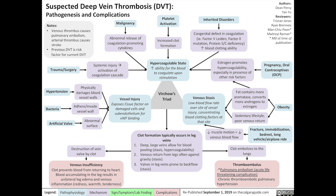Let's start off with vessel injury. Vessel injury exposes tissue factor on damaged cells and subendothelium for von Willebrand factor to bind, thus triggering the clotting cascade. For more on the clotting cascade, please see the Calgary Guide video on the clotting cascade.